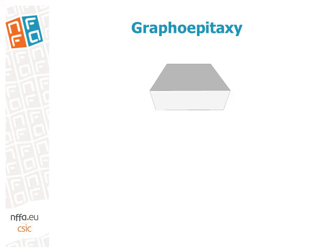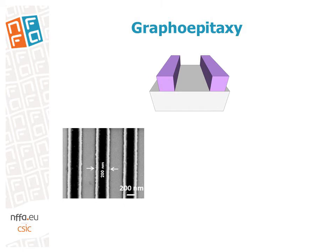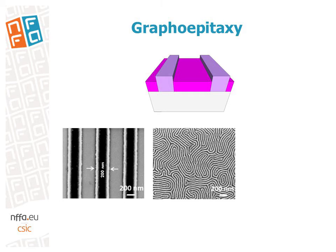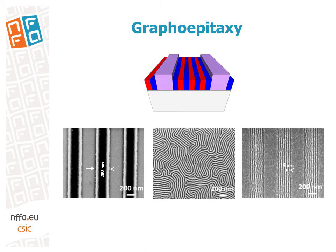Unfortunately, the phase-separation of block copolymers only induces short-range order. To induce long-range order, which means to control the self-assembly on large areas, we have to fabricate guiding patterns. The use of topographic guiding patterns, as shown here in purple, to direct the self-assembly of block copolymers is called graphoepitaxy. One of the blocks preferentially wets the side walls of the guiding pattern, and therefore the block copolymers self-assemble in straight domains parallel to the guiding pattern walls.